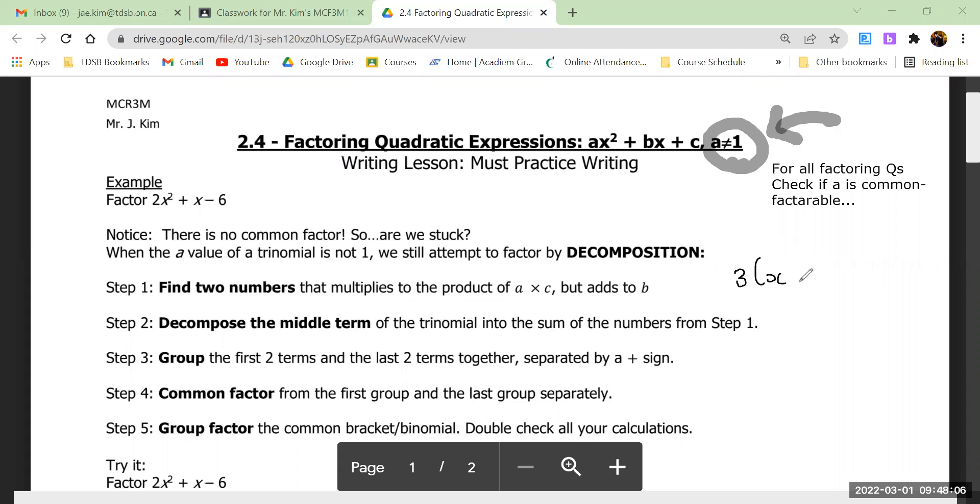By factoring out, I mean dividing out. You divide, like in my example here I divided the 2 out of everything.